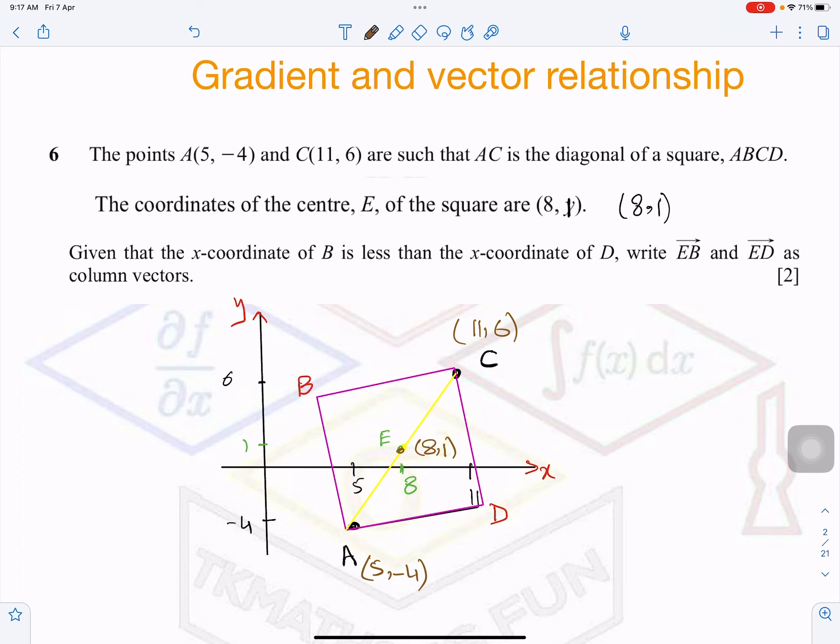Now what you have to find out is vector EB and vector ED. And what is given is that the x-coordinate of B is less than the x-coordinate of D. This helps us to understand that B is on this side and D is on this side. Otherwise it could be ABCD if the question was the other way around. So let's see how the gradient concept will help us to find out the vector here.